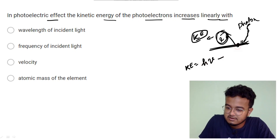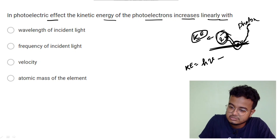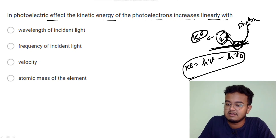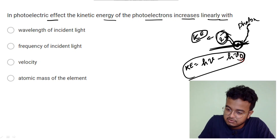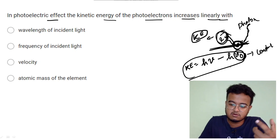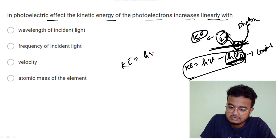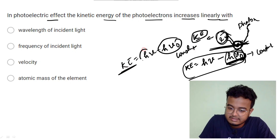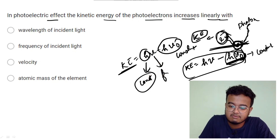Here, the threshold frequency is hν₀. That is the kinetic energy formula. The kinetic energy equals hν minus hν₀. It is the Planck's constant multiplied by frequency. So kinetic energy equals h times ν minus h times ν₀, which is Planck's constant times the difference in frequency — depending on the frequency of incident light.